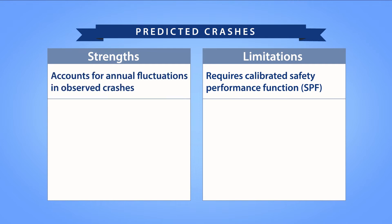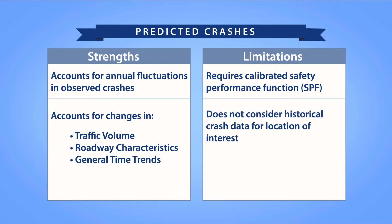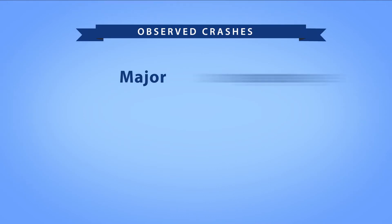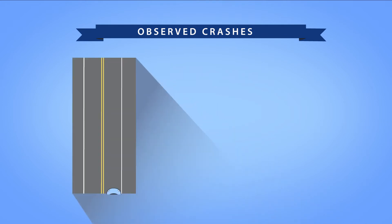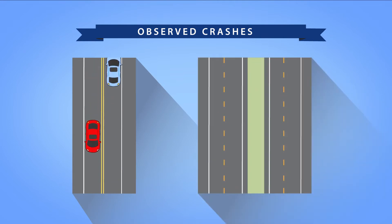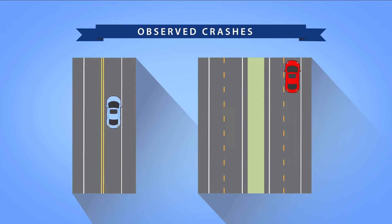This approach assumes the SPF prediction is representative of future safety performance. While it accounts for annual fluctuations in observed crashes as well as changes in traffic volume, roadway characteristics, and general time trends, it does not consider historical crash data for the location of interest. Therefore, this approach is appropriate when the observed crash history is not informative of future conditions — generally when there are major changes to the land use, traffic operations, or facility type. For example, if the existing condition is a two-lane road and the future condition of interest is a four-lane road, then the historical observed crashes probably do not reflect the safety performance under the future four-lane condition. In these cases, the predicted crash frequency is generally appropriate.